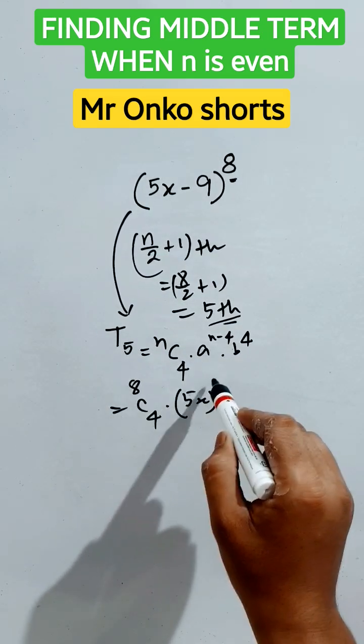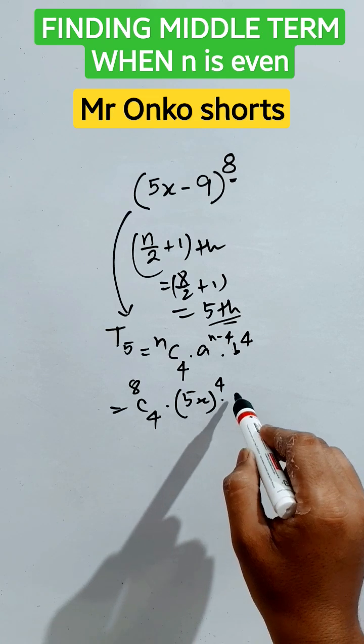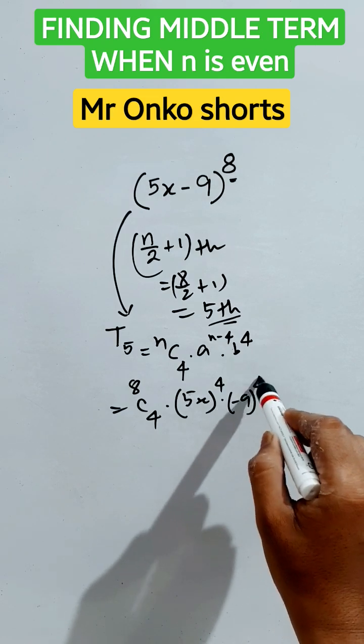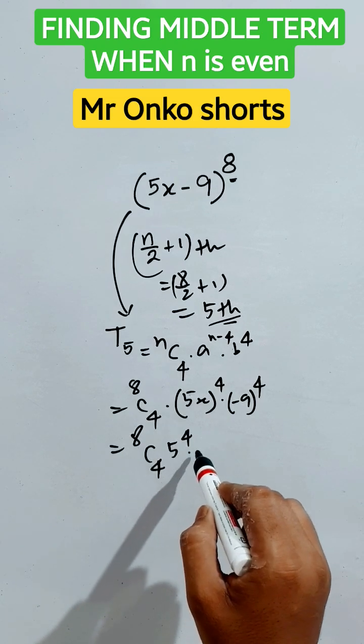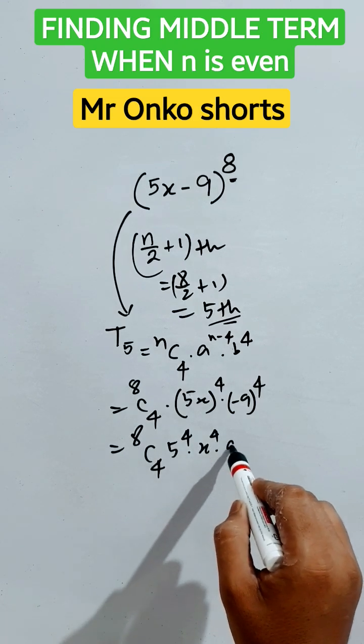to the power 8 minus 4, that is 4, into b is minus 9 here, whole to the power 4. It is ⁸C₄, 5 to the power 4, into x to the power 4, into 9 to the power 4.